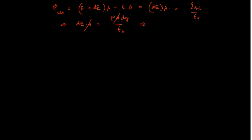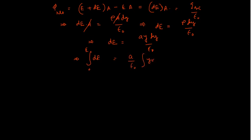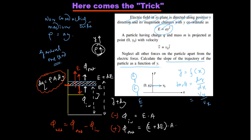Substituting ρ = ay: dE = ay dy/ε₀. Integrating from 0 to E on the left and 0 to y on the right: E = ay²/(2ε₀). That is the electric field we obtain by the general (long) method.